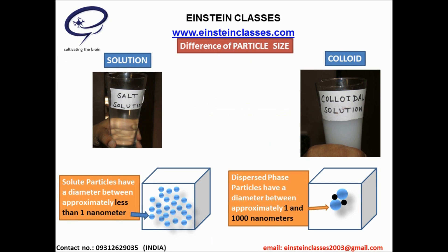We discuss the difference between solution and colloid. One of the main differences is the size of particles. The size of solute particles is very small compared to the size of dispersed phase particles. The diameter of solute particles is in the range of less than one nanometer, and the diameter of dispersed phase particles is in the range of more than one nanometer.